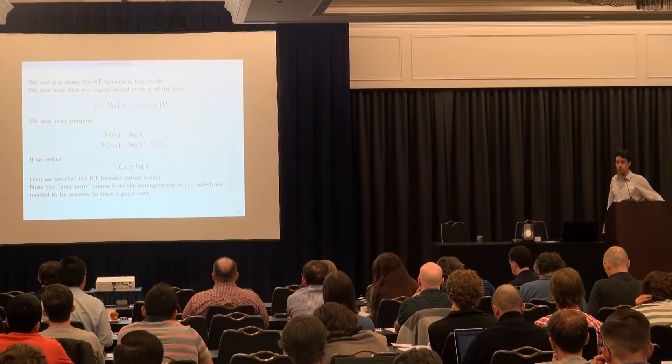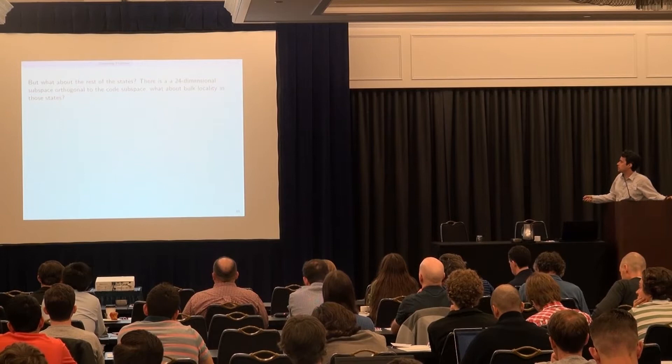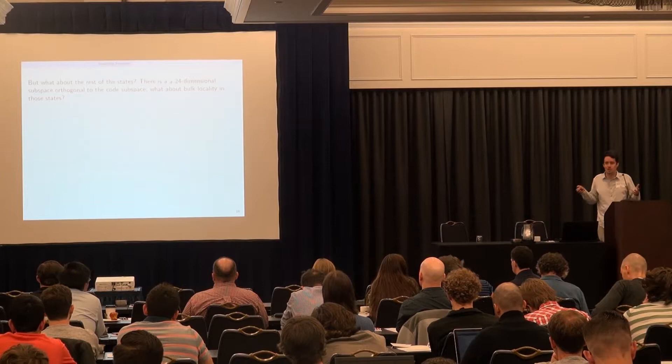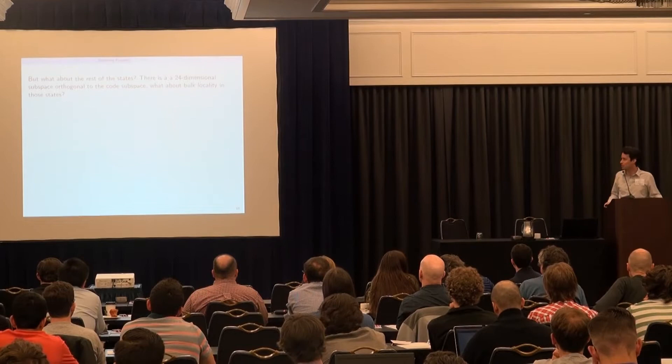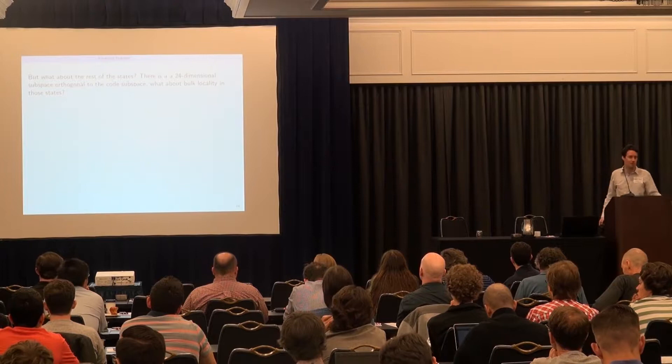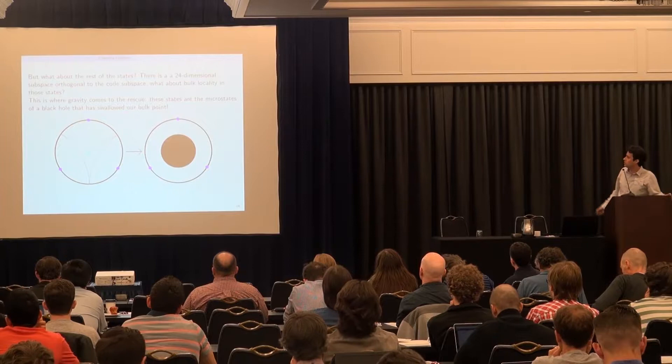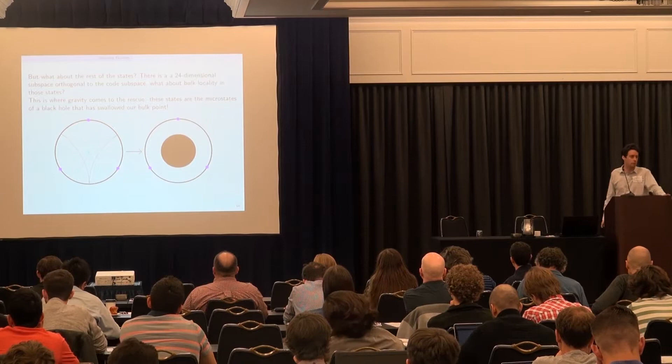You might say: what about the rest of the states? Holography was supposed to be an isomorphism between Hilbert spaces, but I've only talked about a three-dimensional subspace. The claim is that gravity comes to the rescue — those states correspond to microstates of a black hole which has eaten the point we were talking about. There are 24 such states because black holes have lots of entropy. This shows why gravity is essential to having an equivalence between different numbers of dimensions.